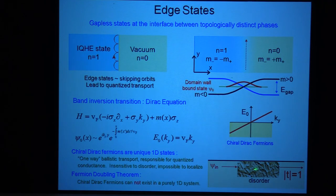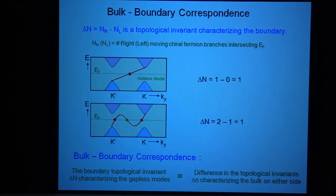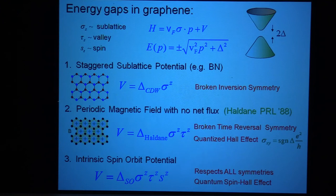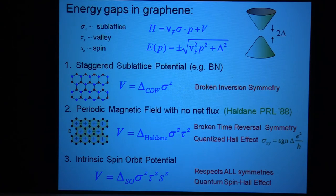It puts the right movers on the top edge and on the other edge are the left movers — so it spatially separates them. What I want to do now is ask whether there's anything else that could happen in graphene. This gives us something interesting conceptually, so let me sort of summarize the way we thought about this.